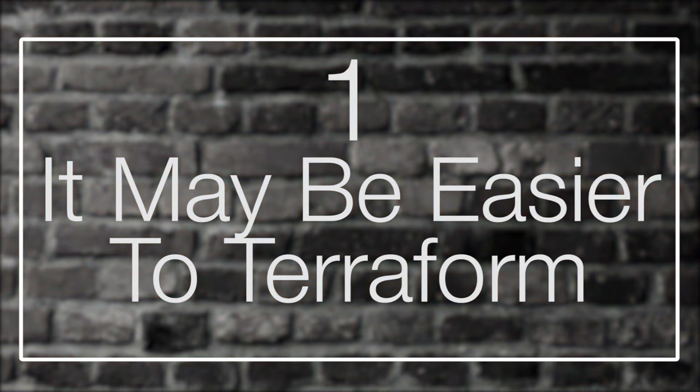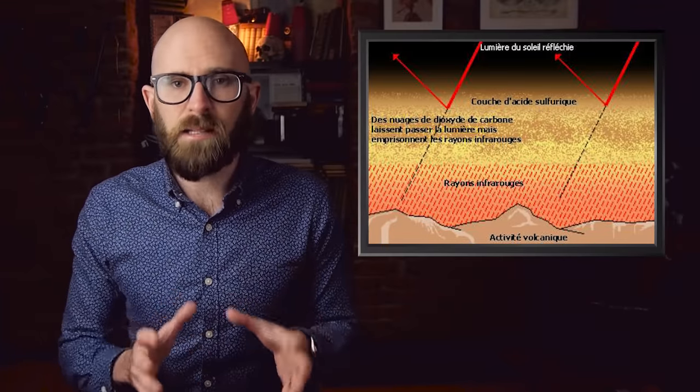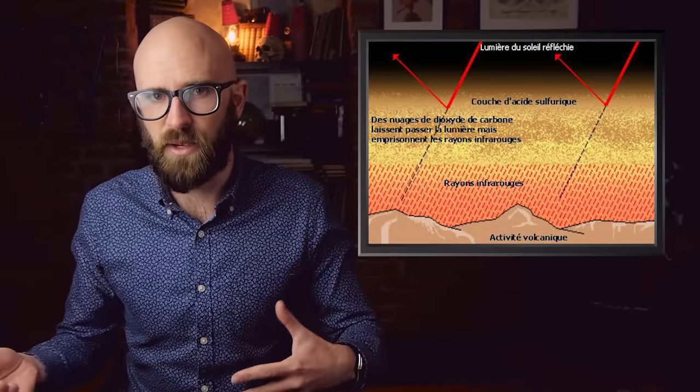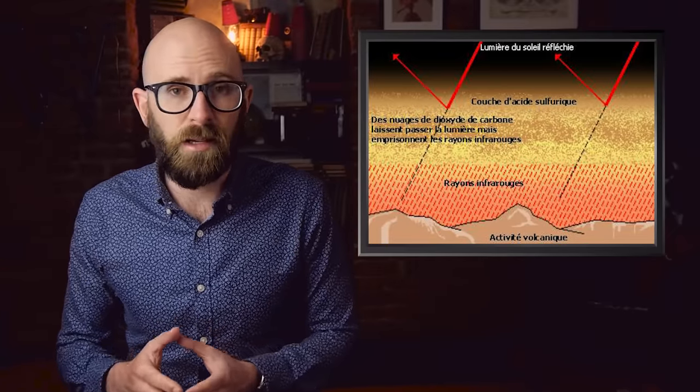1. It Might Be Easier to Terraform. Venus is home to a massive runaway greenhouse effect, thanks to its thick, CO2-rich atmosphere. It's the hottest planet in the solar system, even though it's only the second one from the Sun. Many methods have been proposed for terraforming Venus, both in science fiction and by real scientists.